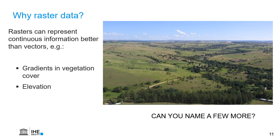Also, other properties we can derive from elevation, such as the slope or the aspect of the landscape. So there are many physical properties that we can represent as gradients, and have to represent as gradients, for which raster data is much better than vector data.